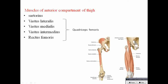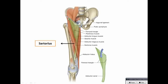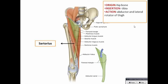All the quadriceps femoris muscles are inserted to the patella — the patella is a sesamoid bone. Sartorius is attached to the medial aspect of the tibia. Sartorius originates from the hip bone, insertion to the tibia, action: abductor and lateral rotator of the thigh — causing abduction and lateral rotation of the thigh, leading to a position like a tailor. So this muscle is called the tailor's muscle. Nerve supply is the femoral nerve, which supplies the anterior compartment of the thigh.